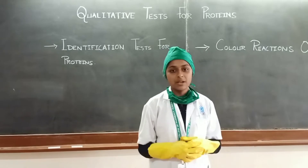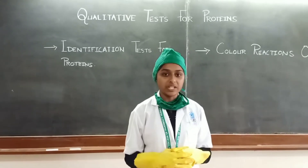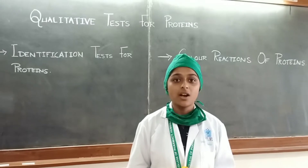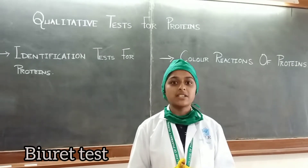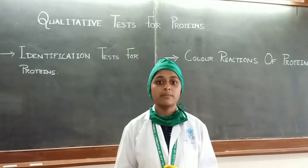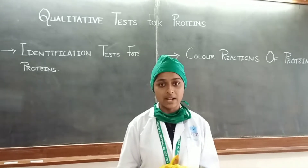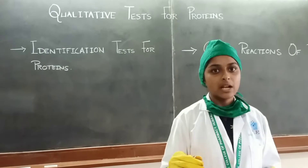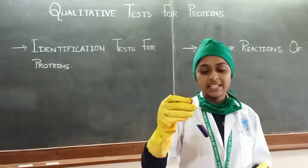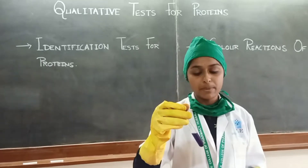Hello everyone, I am Archana. I am performing a qualitative test for proteins for a given unknown sample. First, the biuret test: 3 ml of sample solution plus 2 ml of NaOH plus 2 to 3 drops of CuSO4. Mix well. By performing it, appearance of a violet color indicates that proteins and peptides may be present.